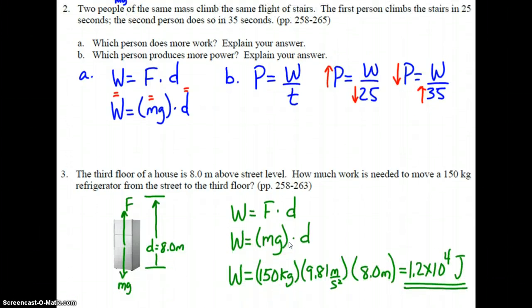Number three, the third floor of a house is eight meters above the street level. How much work is needed to move a 150 kilogram refrigerator from the street to the third floor? Here we have a refrigerator. Free body diagram on the refrigerator is the weight of the refrigerator down, the force upward that we need to apply to lift it the distance of eight meters vertically. But physics work is that the force and the displacement are parallel to each other. So we're only concerned about overcoming the weight over the eight meter displacement.